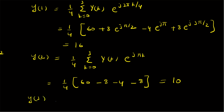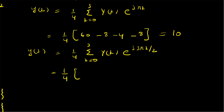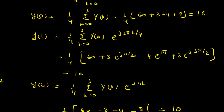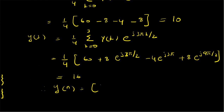For n=3: y[3] = (1/4)·[60 + 8·e^(j3π/2) + (−4)·e^(j3π) + 8·e^(j9π/2)], which simplifies to 16. Therefore, the circular convolution sequence y[n] = {18, 16, 10, 16}.